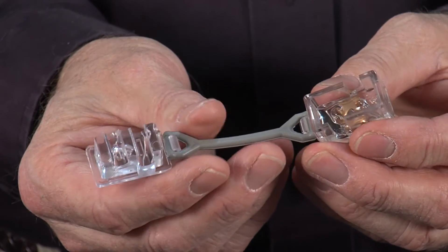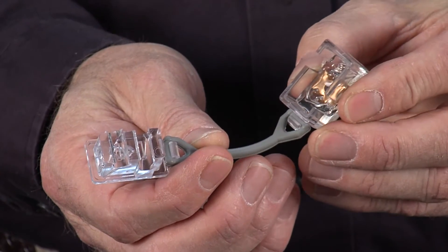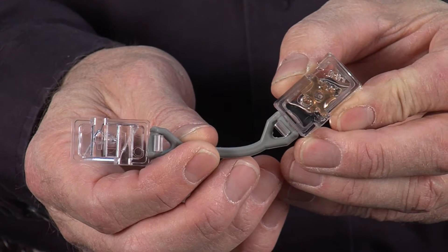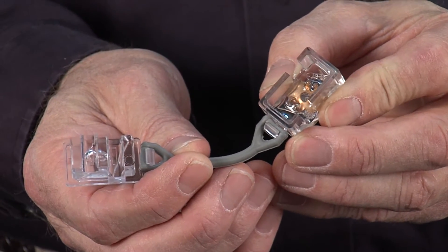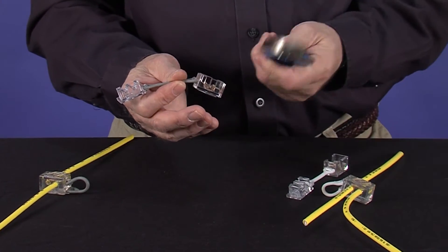TraceSafe connectors are made of clear, high-impact resistant polycarbonate resin, basically the same material used to make bulletproof glass. They're easy and safe to use, and you never have to strip the wire using TraceSafe connectors. No special tools required. All you need is a pair of channel lock pliers to install your connectors.